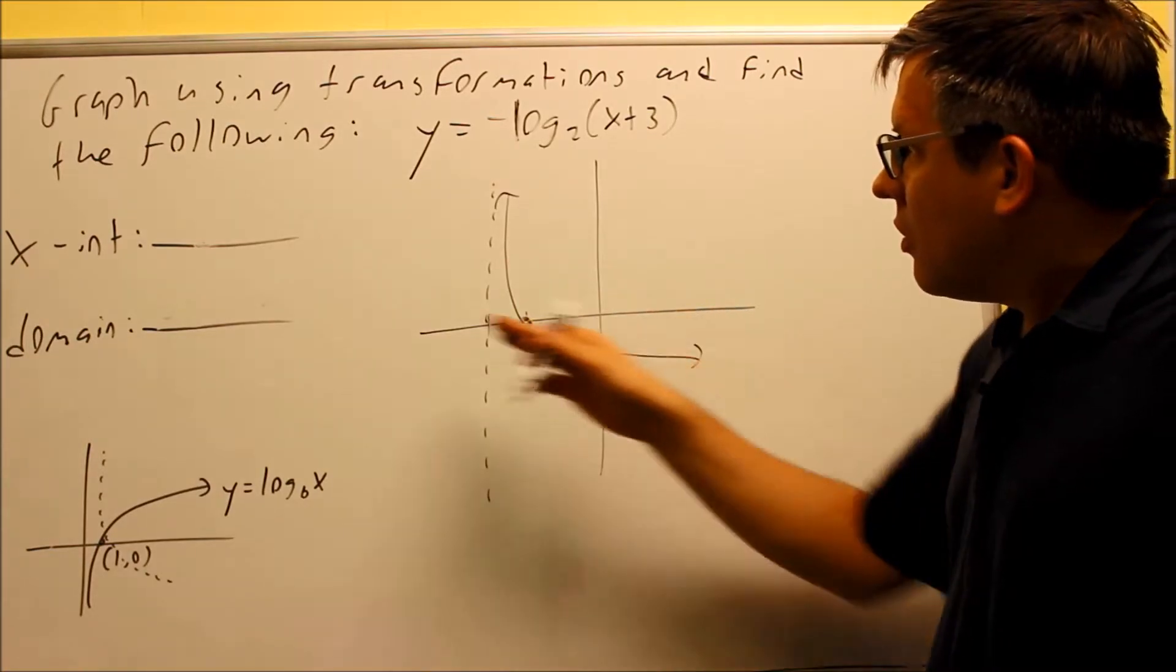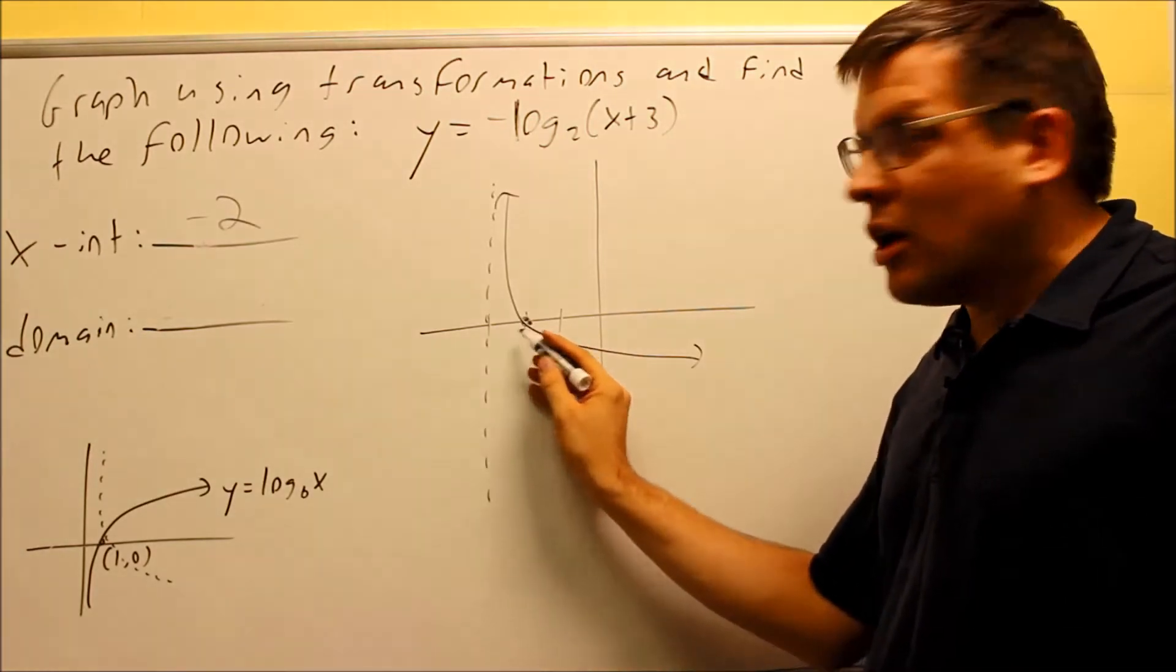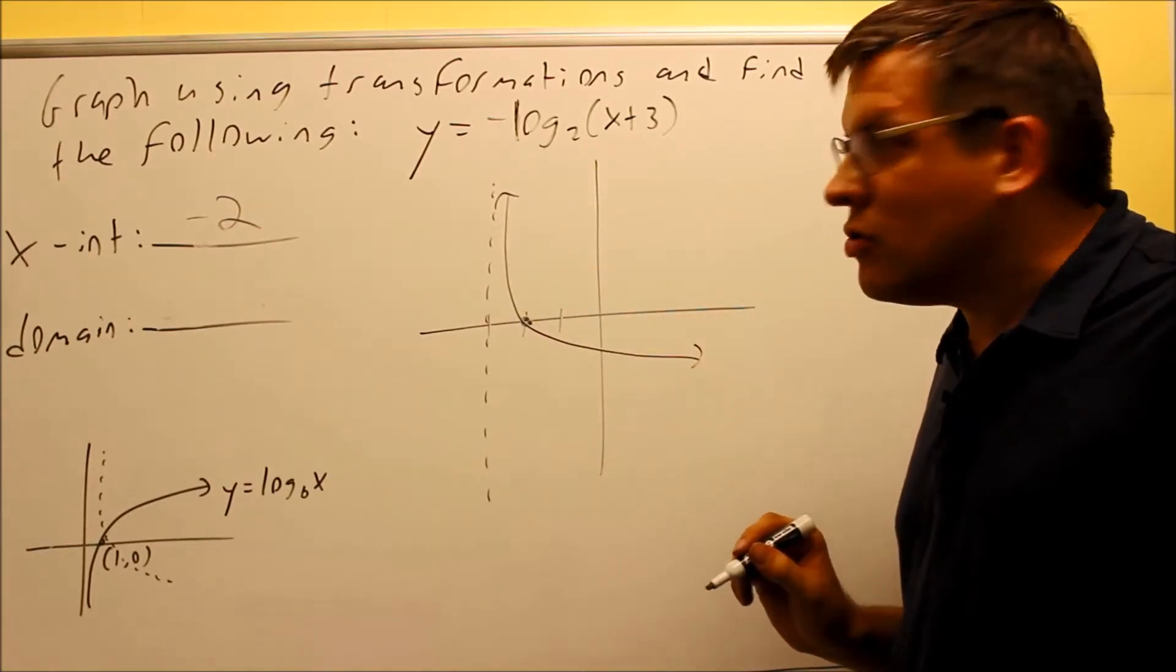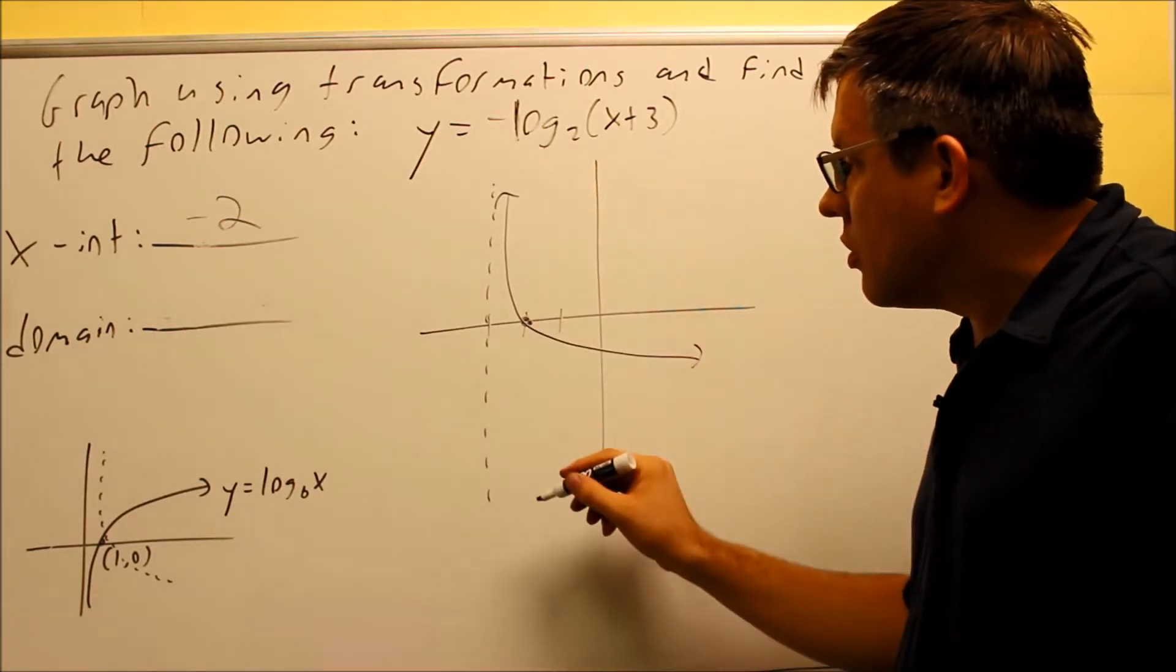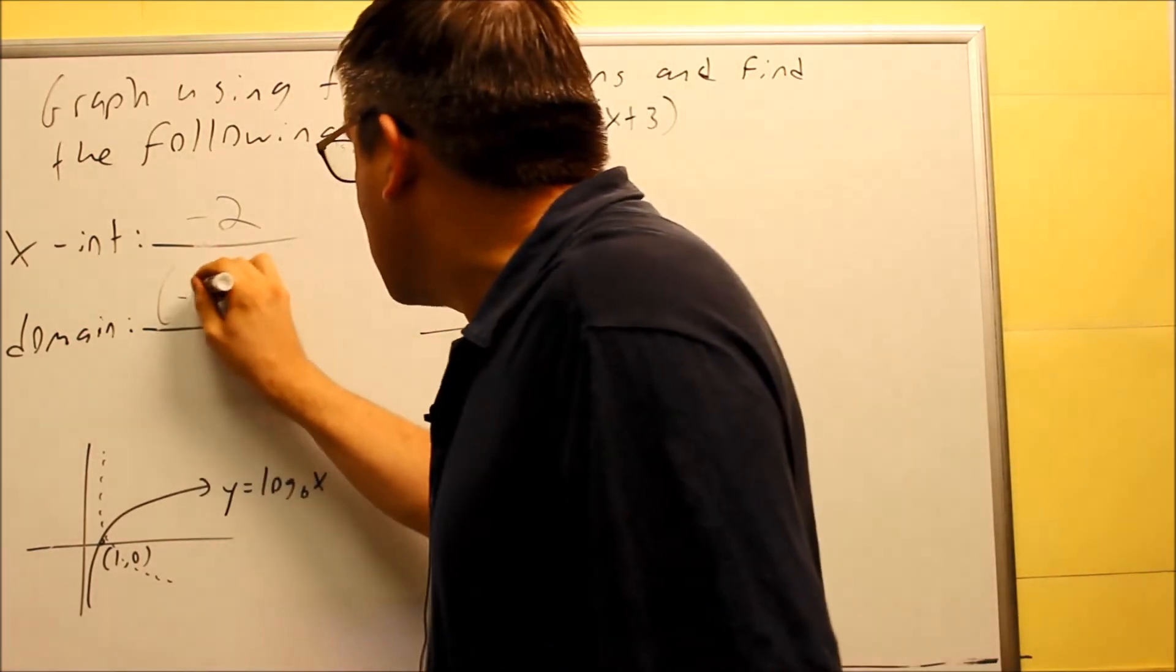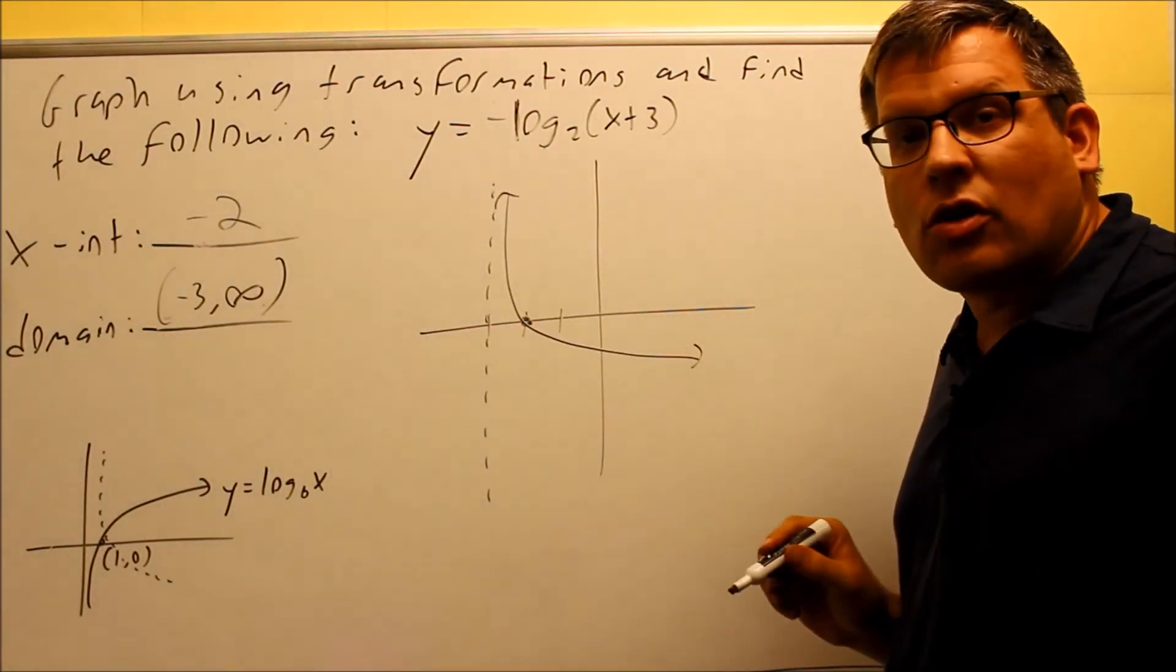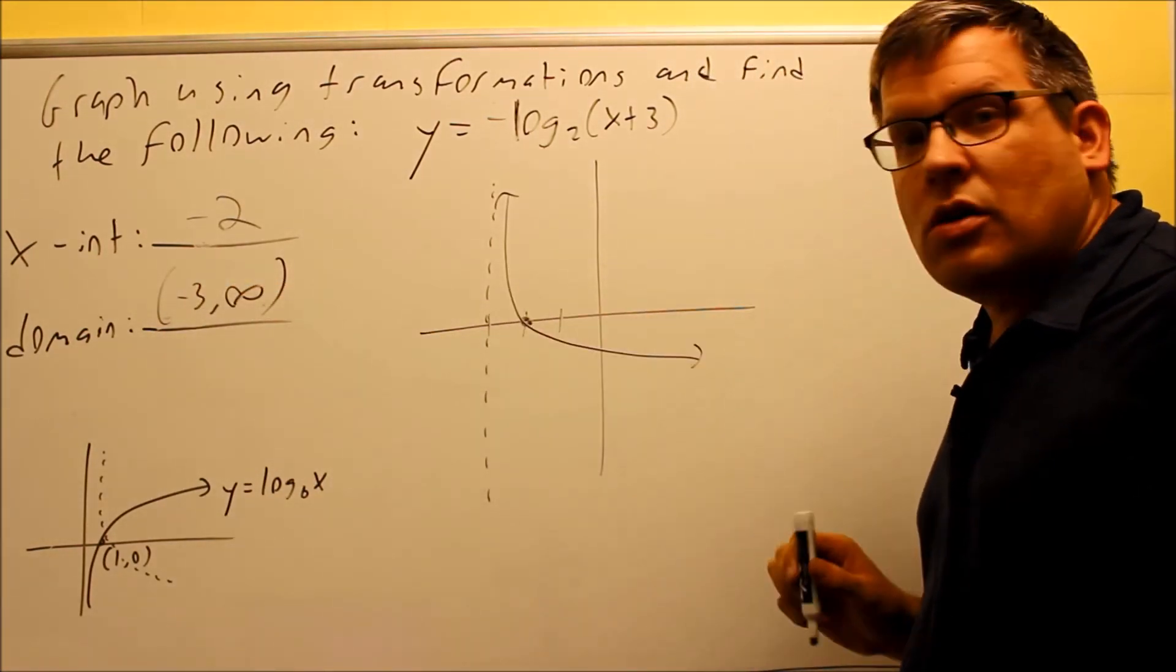So the x-intercept, we know that's going to be negative two because it crosses right here. We just said that one to the right of your vertical asymptote. And now the last thing we want to do is domain. Domain is talking about the x-values the graph is using. The graph is only using values on this side of the vertical asymptote, which means that those are x-values that are greater than negative three. So negative three, we're going to put a parenthesis on it, and that's going to go to infinity. We can't use any more numbers to the left of negative three. Negative three is where our vertical asymptote is. That's never included. That's always a parenthesis. And all the values go this way to the right.